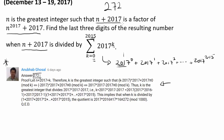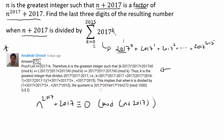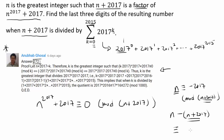Let's start with the modular arithmetic. We have something being a factor of something, so modular arithmetic is one of the first things you may turn to. We have n to the 2017 plus 2017 being congruent to 0 mod n plus 2017, because n to the 2017 plus 2017 is a multiple of n plus 2017. Also realize that n is congruent to negative 2017 mod n plus 2017, because when we take away n plus 2017 from n — that is n minus (n plus 2017) — it is congruent to negative 2017.